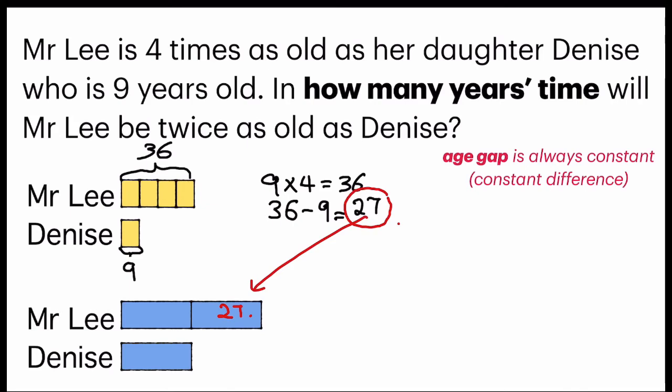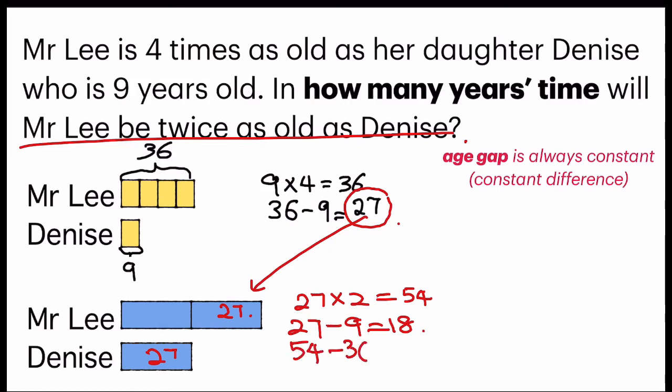And they say Mr. Lee would be twice as old as Dennis. So which means Mr. Lee would be 27 times 2, which is equal to 54. Or we can just say that Dennis is 27. And using that 27 minus 9, I get 18. Or I can take Mr. Lee's age, which is 54, minus 36. I will also get 18.